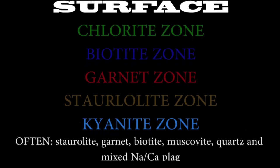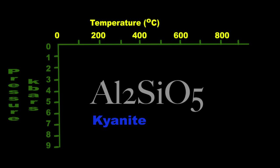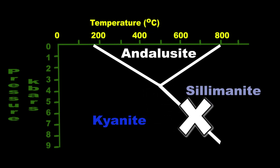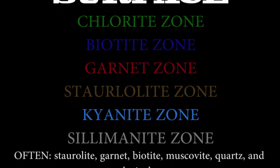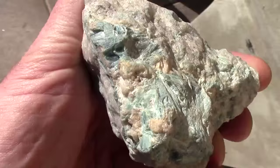Next comes the kyanite zone, as the Al2SiO5 polymorphs appear. Blue-bladed kyanite is usually found with these persisting minerals. Looking at the kyanite-andalusite-sillimanite PT diagram, we know that as we get to higher grades of metamorphism, our pressure is usually too high for andalusite, so the next zone to appear is the sillimanite zone. All our persistent minerals are still present — staurolite, garnet, biotite, muscovite, quartz, and plagioclase — and there can even be some leftover kyanite from its conversion to sillimanite as the reaction oversteps the univariant curve.